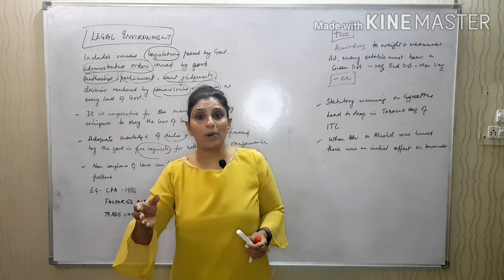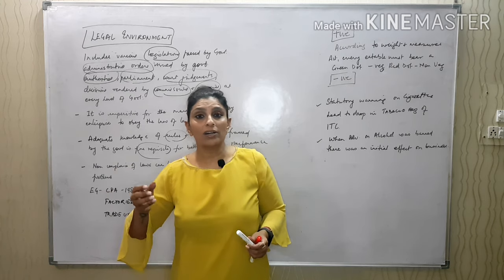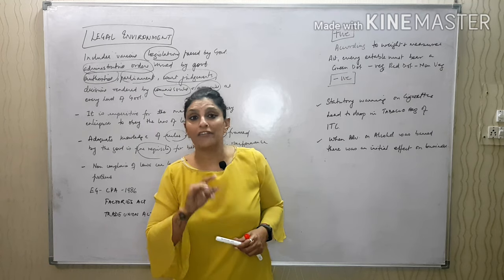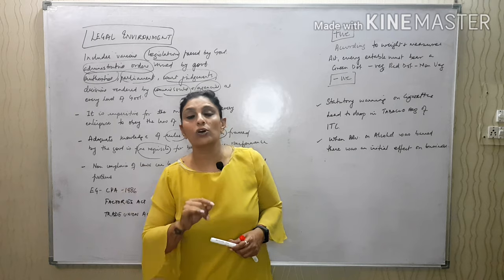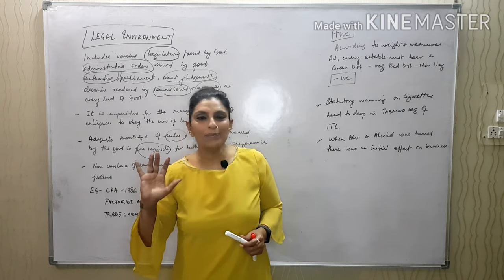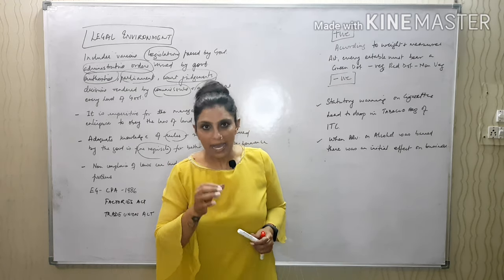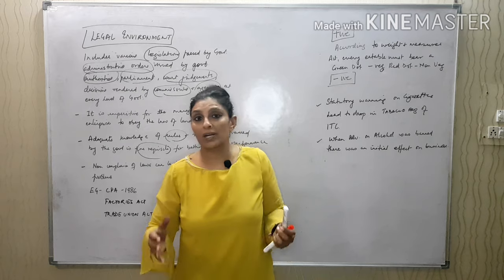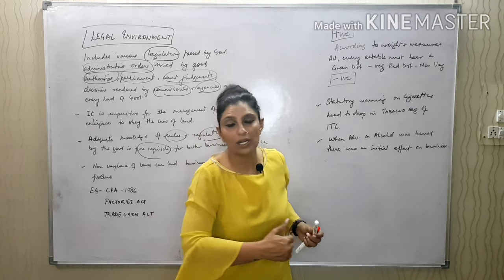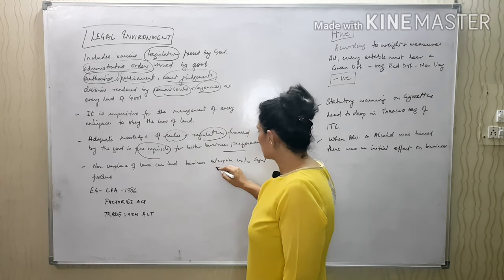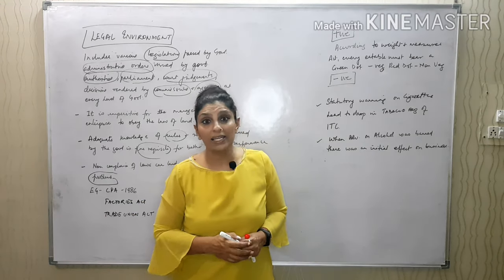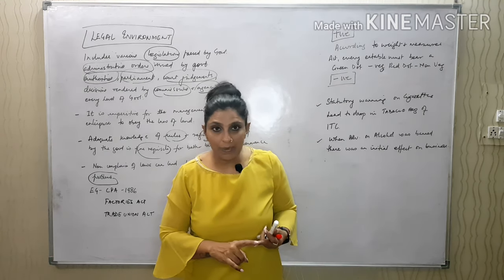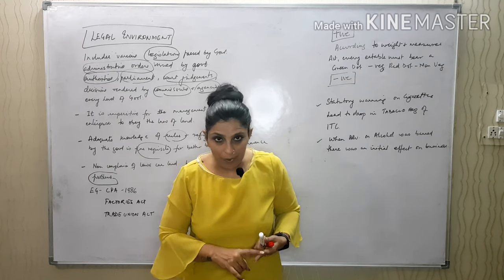Adequate knowledge of rules and regulations framed by the government is a prerequisite for better business performance. ITC lost its tobacco business and had to diversify — that's why they started Sunfeast pasta, biscuits, Aashirvaad atta, and Classmate registers. Non-compliance of laws can lead a business enterprise into legal problems. Today, labels on all products must have complete details — veg/non-veg, content, MRP, date of manufacturing, date of expiry, place of manufacture — everything is mandated by law.